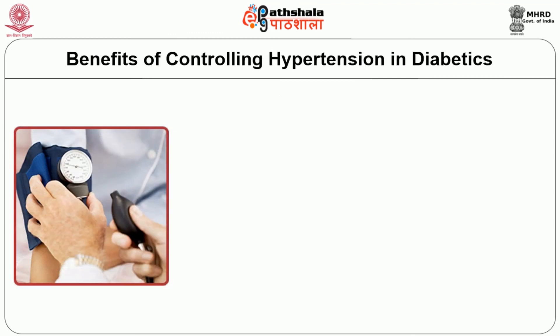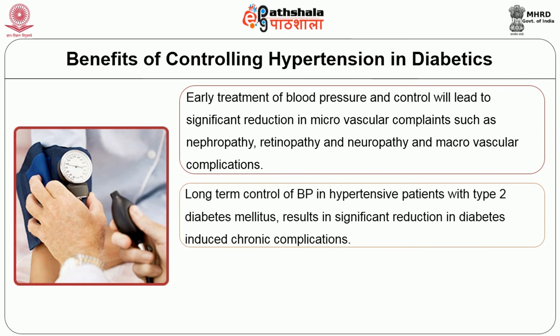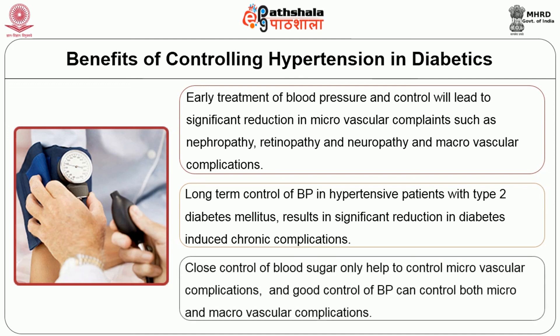Early treatment and control of blood pressure leads to significant reduction in both microvascular and macrovascular complications. Long-term control of blood pressure in hypertensive patients with type 2 diabetes mellitus results in significant reduction in diabetes-induced chronic complications. Close control of blood sugar helps to control microvascular complications, while good control of blood pressure can control both micro and macrovascular complications. Weight management, a low-fat diet with fibrous fruits and vegetables, good physical activity, and lifestyle changes can help to control or prevent hypertension in diabetics.